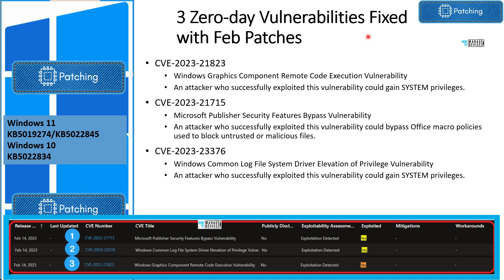Zero-day vulnerabilities — these are must-fix and we should immediately fix these vulnerabilities with February patches. This only covers Microsoft application vulnerabilities, and there are three. The first one is CVE-2023-21823. This vulnerability is to do with the Windows graphics component remote code execution vulnerability. As per Microsoft, an attacker who successfully exploited this vulnerability could gain system privileges. That's why zero-day vulnerabilities are very critical and organizations should fix it as soon as possible.